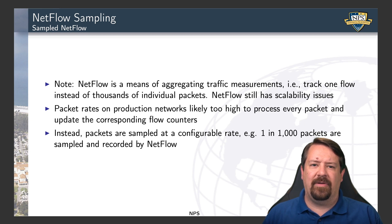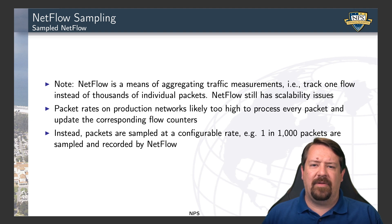Another important and commonly used feature of NetFlow is sampling. NetFlow itself is already a means of aggregating traffic measurements — we give up some detail by not tracking every single packet in exchange for scalable analysis of all traffic passing through a router or network. However, on backbone links, there is still likely to be too high a packet rate for NetFlow to process every single packet. This is where NetFlow sampling comes in. Part of the configuration of the NetFlow observer is the sampling rate — for example, one in a thousand packets may be sampled. So for every thousand packets that go through the interface, only one will actually be counted in a NetFlow record, giving a representative sample while keeping the number of records manageable.